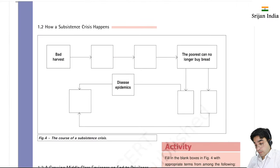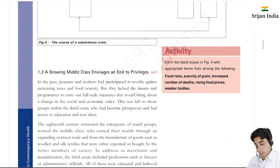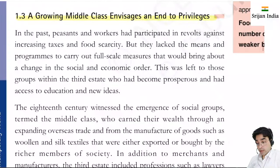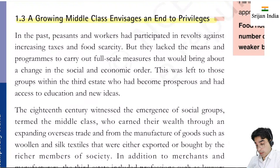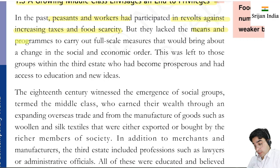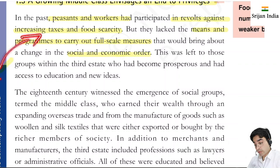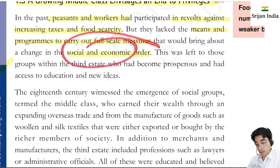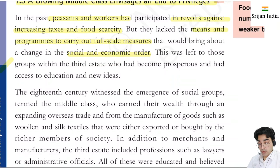Bad harvest, disease epidemics, the poorest could no longer buy bread. A growing middle class envisaged an end to privileges. The middle class felt it was wrong that only one section had privileges. In the past, peasants and workers had participated in revolts against increasing taxes and food scarcity, but they lacked the means and programs to carry out full-scale measures that would bring about a change in the social and economic order.